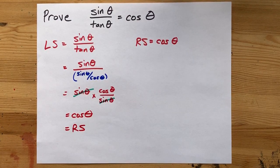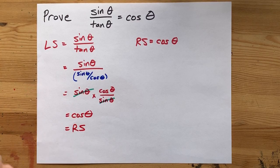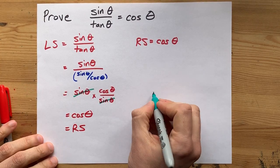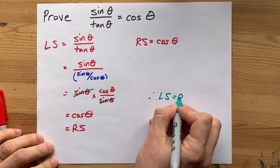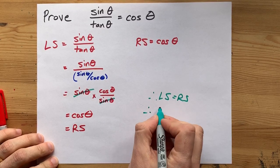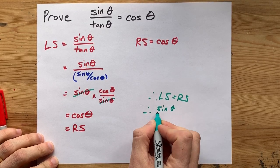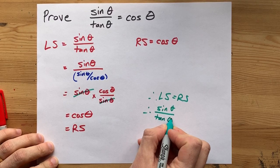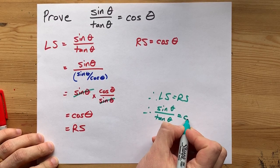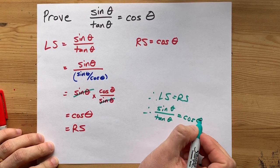So, to celebrate, I like to rewrite what I've discovered. Therefore, left side equals right side, and therefore, the sine of any angle divided by the tan of that angle equals the cosine of that angle.